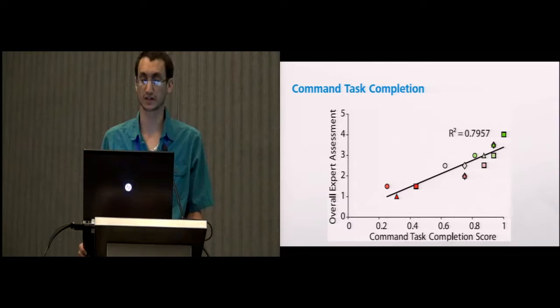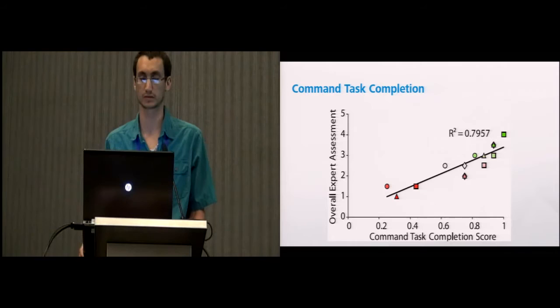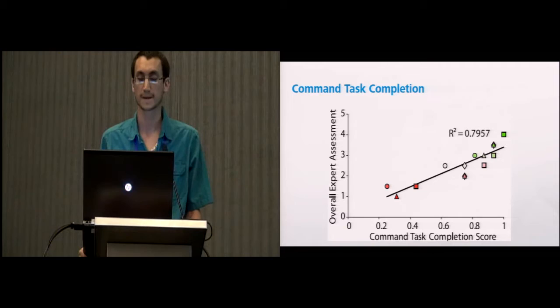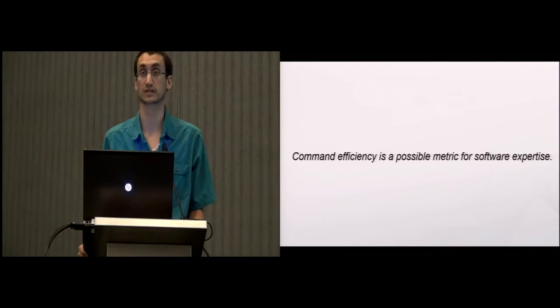One of the strongest indicators of expertise was from the command task when they had to use a single command to complete a task. We calculated a completion score: if they completed a task successfully they'd get a one, if they were almost there they got 0.5, and if they didn't make much progress they got zero. That completion score had a fairly strong correlation to the overall assessment of expertise. That provides a really important lesson: command efficiency is a really good candidate for software expertise.